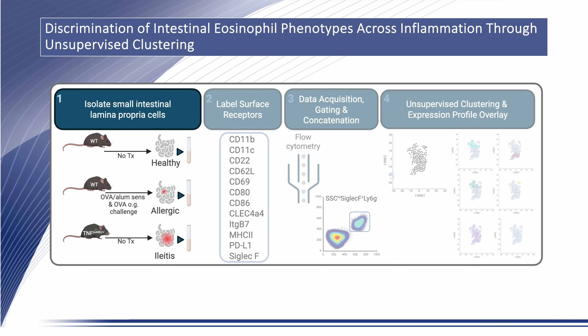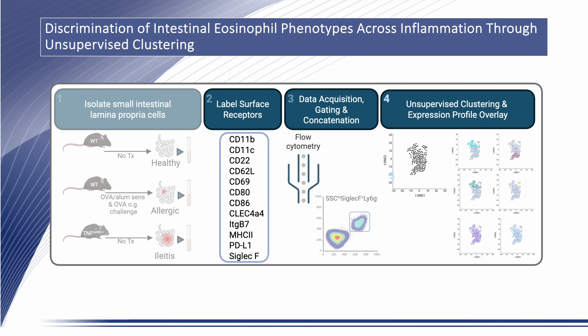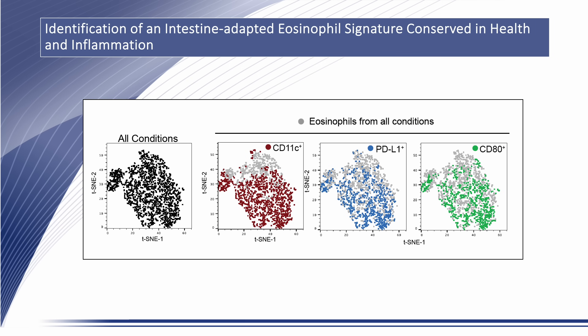To unify and reconcile reported subsets across health and disease, we isolated lamina propria cells from whole and small intestines of healthy wild-type mice, food antigen challenge mice, and TNF-delta area mice that exhibit spontaneous ileitis. We performed targeted multidimensional flow cytometry followed by unsupervised clustering to generate TSNE plots and compared expression patterns of individual receptors overlaid onto these plots. We used CD11C as a primary indicator of intestinal adaptation.